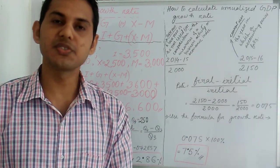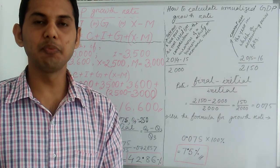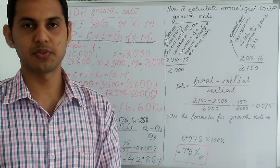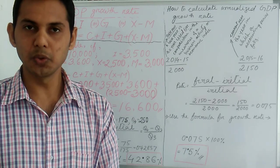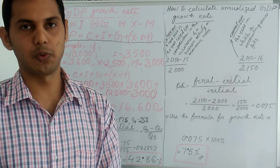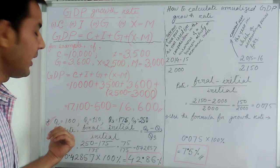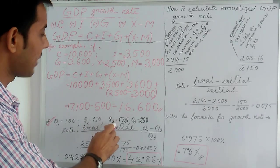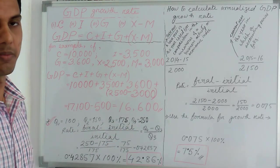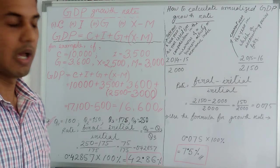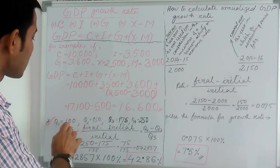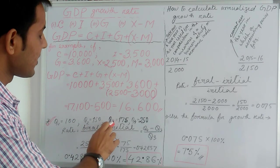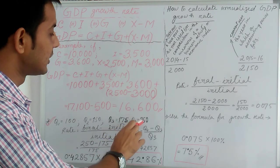Now we are going to discuss GDP growth rate quarterly. Suppose we have four quarters: Q1, Q2, Q3, and Q4. Q1 is 3 months, Q2 is 3 months, Q3 is 3 months, and Q4 is 3 months, totaling 12 months. And the values are: Q1 equals 100, Q2 equals 150, Q3 equals 175, and Q4 equals 250.